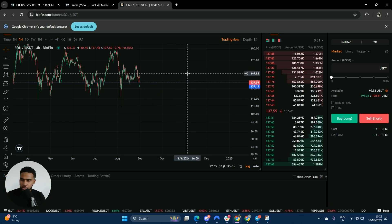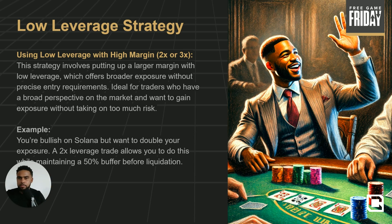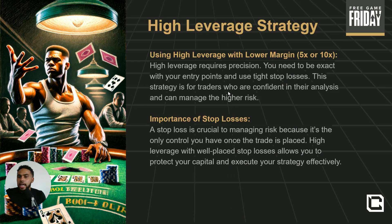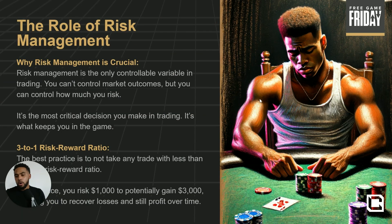So lower leverage strategies — Tom uses this quite a lot — it's about having high conviction and wanting to capture a move with more exposure by borrowing with a higher margin. Now, high leverage trading strategy: using high leverage with lower margin, like 5x or 10x. High leverage requires precision — you need to be exact with your entry points and use tight stop losses. A stop loss is crucial because it's the only control you have once the trade is placed.